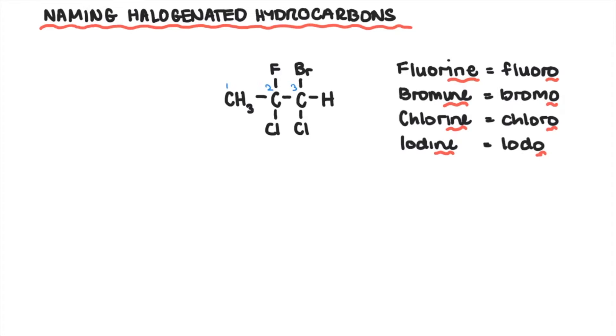So if we go from left to right, positions of fluorine will be 2, chlorine will be 2, 3, and bromine will be also 3.